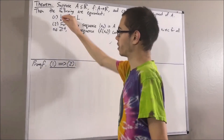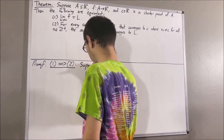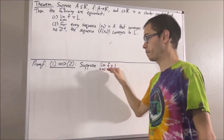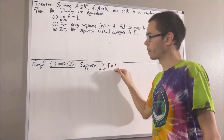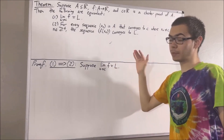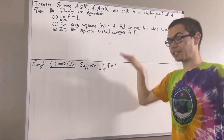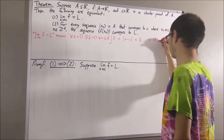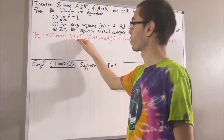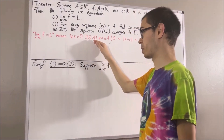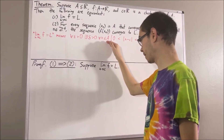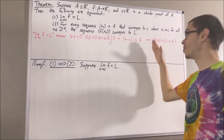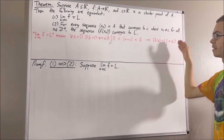To start, let's suppose that one is true, which means we are supposing that the limit as X approaches C of F is equal to L. By definition of the limit of a function, this means: for every epsilon greater than zero, there exists a delta greater than zero, such that for all X in A, if zero is less than the absolute value of X minus C is less than delta, then the absolute value of F of X minus L is less than epsilon.